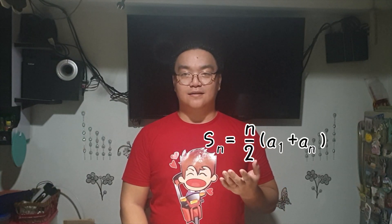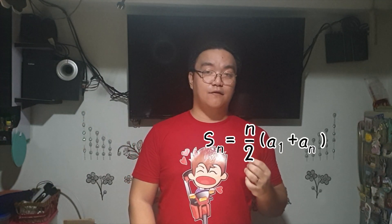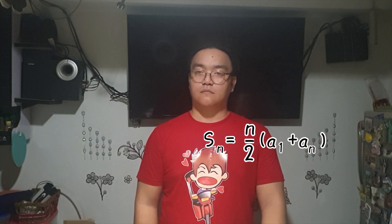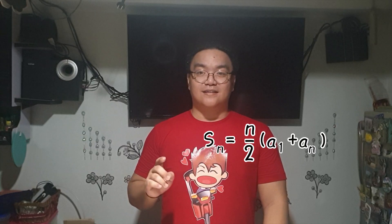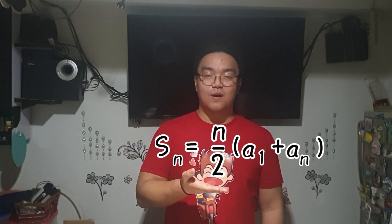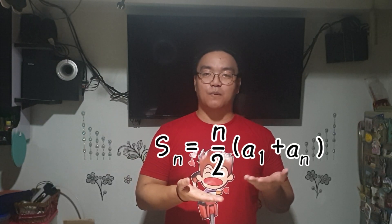From that pattern of adding the first and the last terms, the arithmetic series formula goes by S sub n is equal to n over 2 times the sum of the first plus the last term. I'll repeat, the formula for arithmetic series is S sub n is equal to n over 2 times A sub 1 plus A sub n.